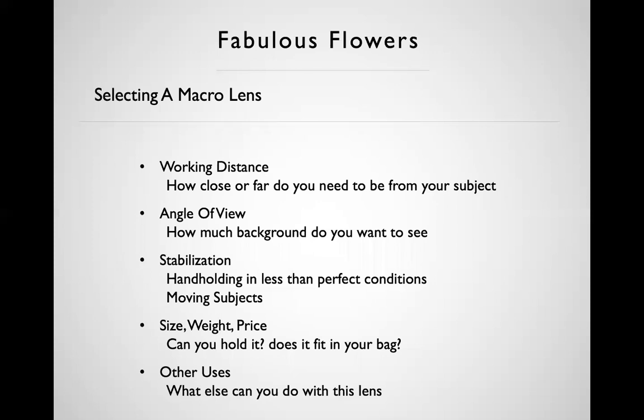The second consideration is angle of view. A 50mm lens on full frame sees approximately 45 degrees. A longer focal length gives you the same subject size but a much narrower angle of view, letting you eliminate background clutter — debris, twigs — without having to physically clean the scene. Stabilization is also important; before mirrorless cameras, you'd want it built into the lens.